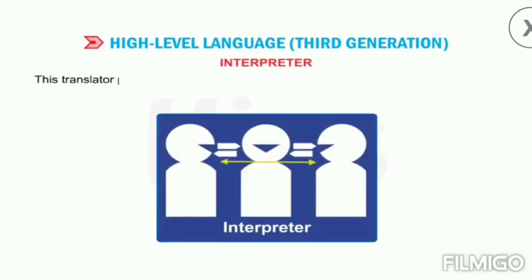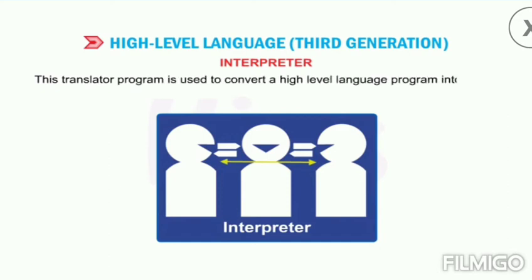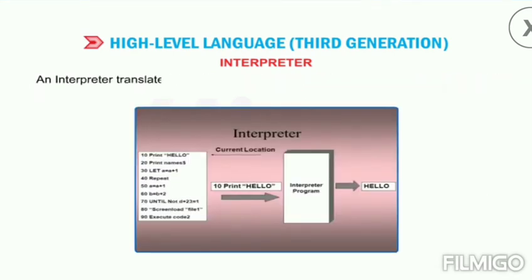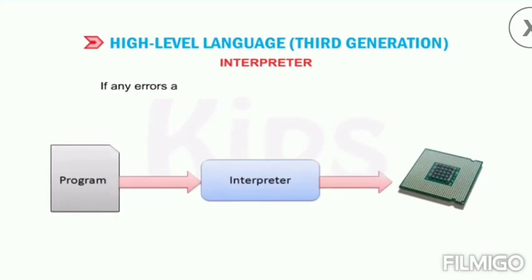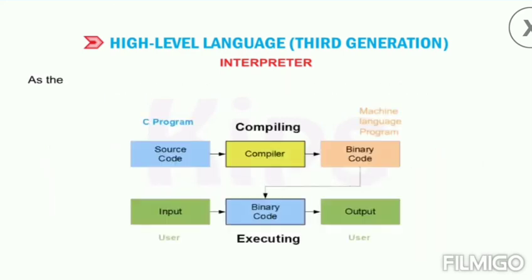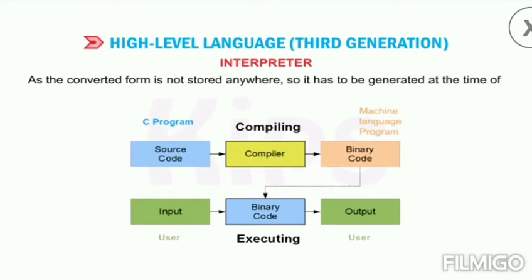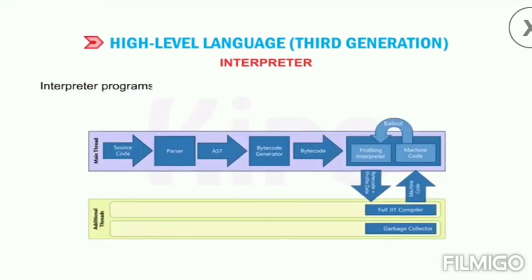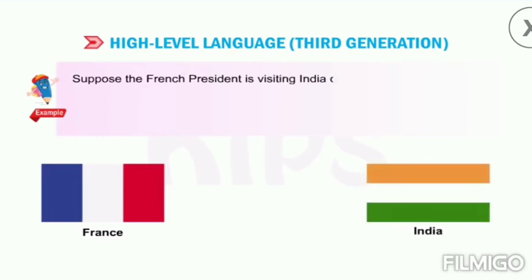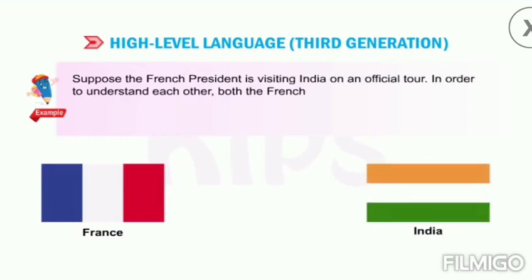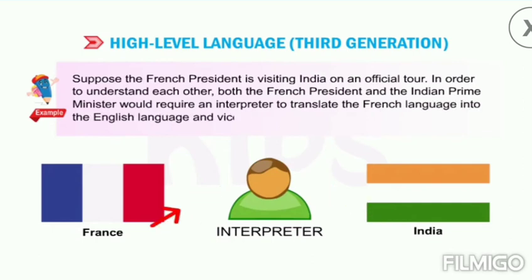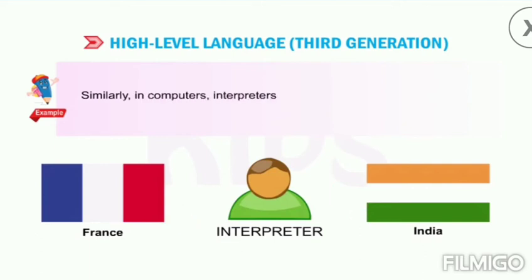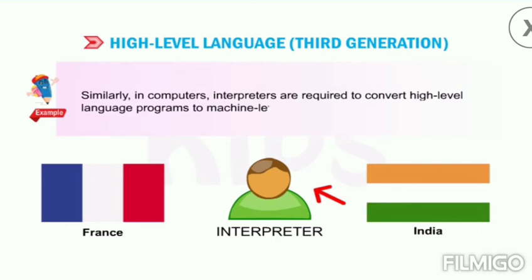The first is the interpreter. This translator program converts a high-level language program into machine language by translating line by line, executing each instruction, then repeating the procedure for the remaining instructions. If any errors are found, they must be removed immediately, as the converted form is not stored anywhere and has to be generated at the time of execution. Interpreter programs are preferred for beginners and are slow in execution speed. For example, when the French president visits India, both leaders require an interpreter to translate between French and English — similarly, computers use interpreters to convert high-level language to machine language.